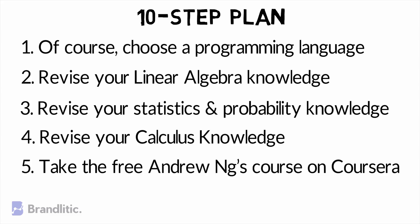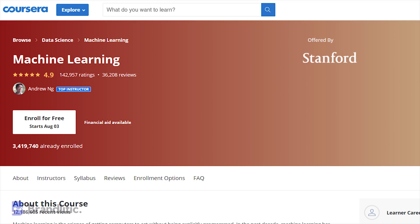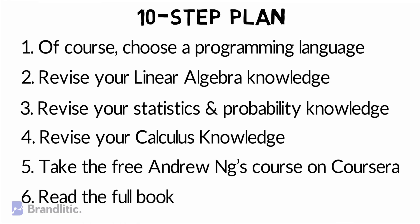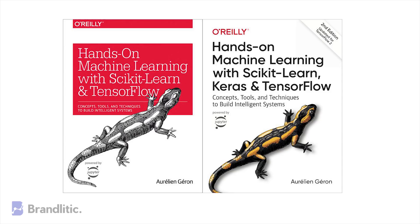Step 5: Take the free machine learning course from Andrew Ng on Coursera. The link is in the description below. Step 6: Read the full book 'Hands-On Machine Learning with Scikit-Learn and TensorFlow.' In the 5-step process I told you to just read Chapter 2, but for the 10-step process I recommend reading the book thoroughly, as it is full of information and good for gaining technical knowledge.